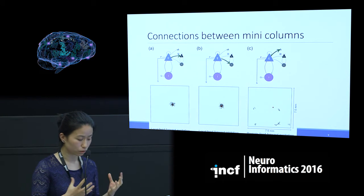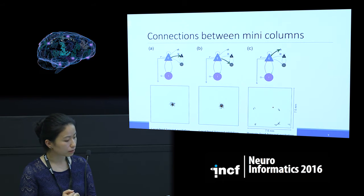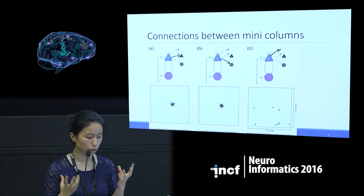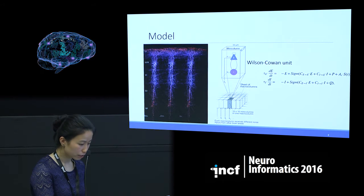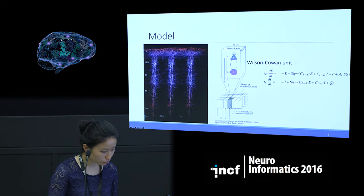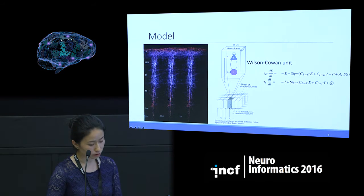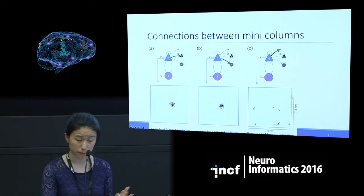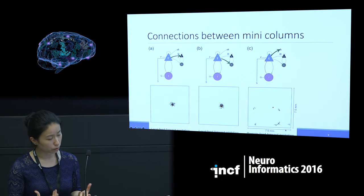This model also needs connectivity. We drew from the existing literature in terms of what this mesoscopic connectivity is. We assume each column to be about 50 micrometres and concatenate them to form a cortical sheet of 7.5 millimetres by 7.5 millimetres — so this is really talking about mesoscopic connectivity.